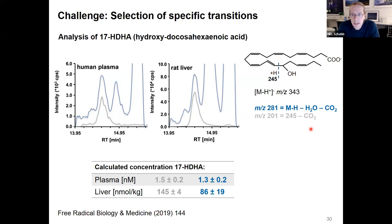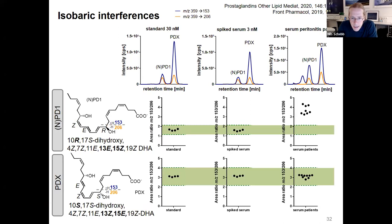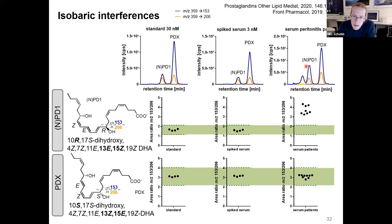One big advantage of using several transitions per molecule is that you can calculate the ratio of these two transitions to gain a higher level of certainty that the compound is really present in your samples. For example, for protectin D1 and PDX, the standard has a specific ratio of two ions formed from alpha cleavage. When you spike a sample with these compounds, the ratio of the two ions is not changed. But in a real peritonitis patient sample, the ratio for PDX remains the same while the ratio for PD1 is totally different, indicating that a different compound is giving rise to that signal.